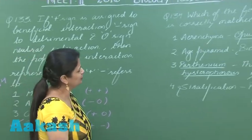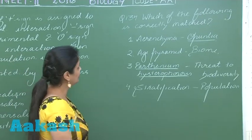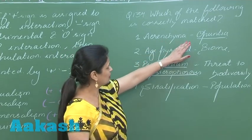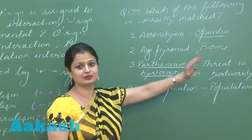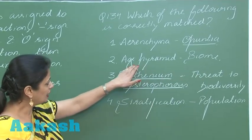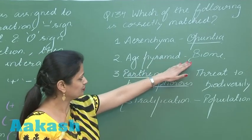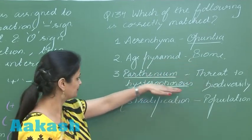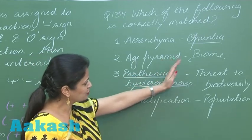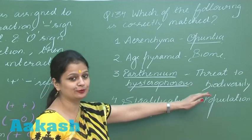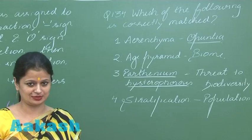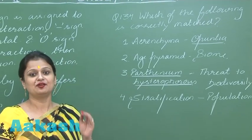Question number 134 — we have to find the correct match. Aerenchyma is present in aquatic plants and provides buoyancy. Age pyramid is for population, not for biome. Parthenium poses a threat to biodiversity — yes, Parthenium is an exotic weed.